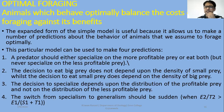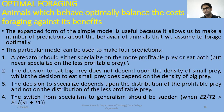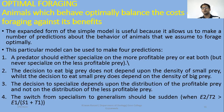Second, the decision to eat a big prey doesn't depend upon the density of small prey, while the decision to eat small prey does depend on the density of big prey. If big prey is more abundant, they will prefer it, because smaller prey density doesn't matter. Third, the decision to specialize depends upon the distribution of the profitable prey, not on the distribution of less profitable prey.